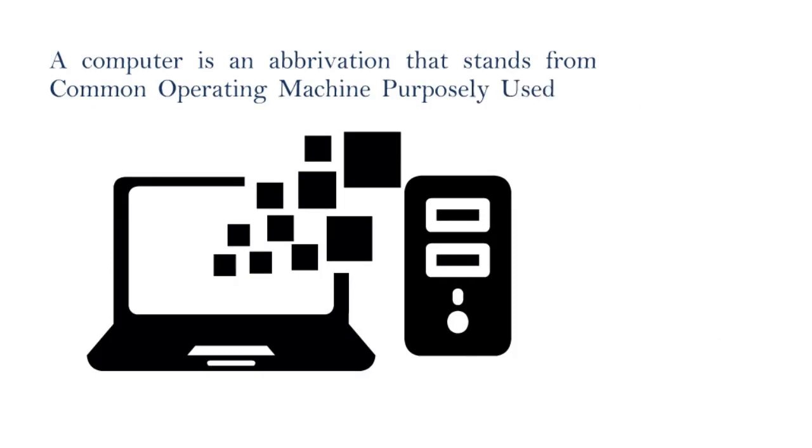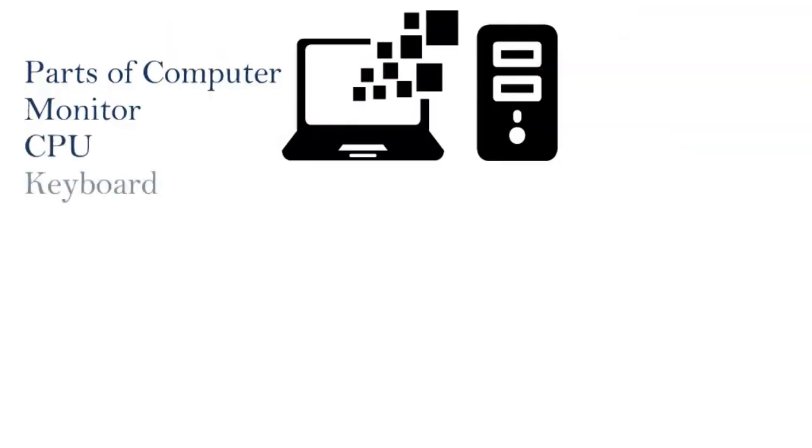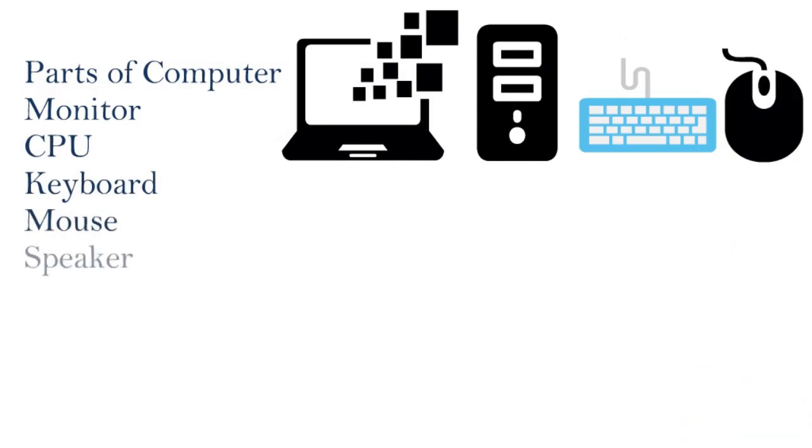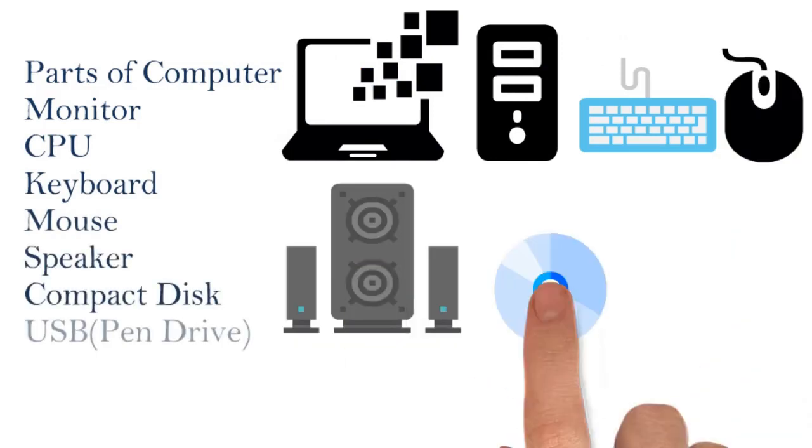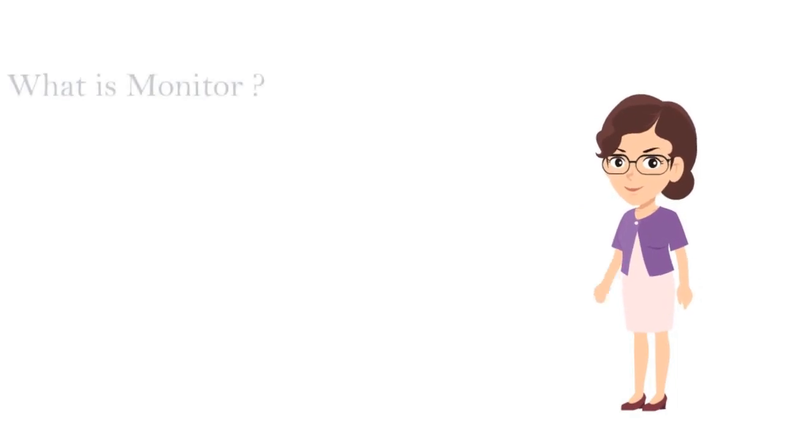A computer consists of different parts which are monitor, CPU, keyboard, mouse, speaker, CD, USB, and many more parts. Now we will talk about some essential parts of a computer.